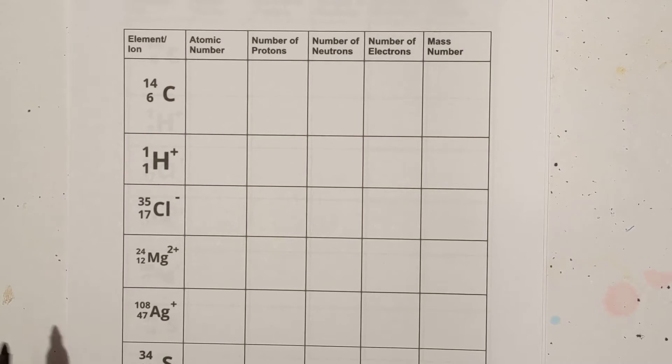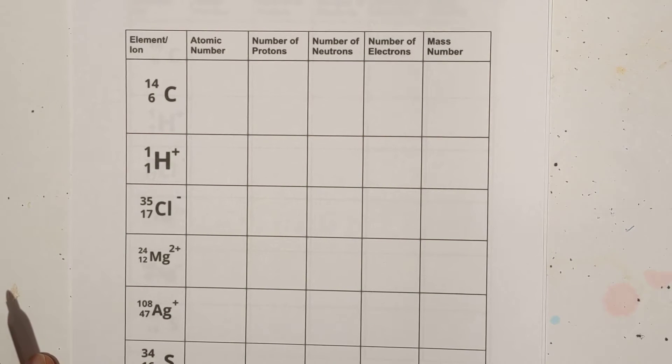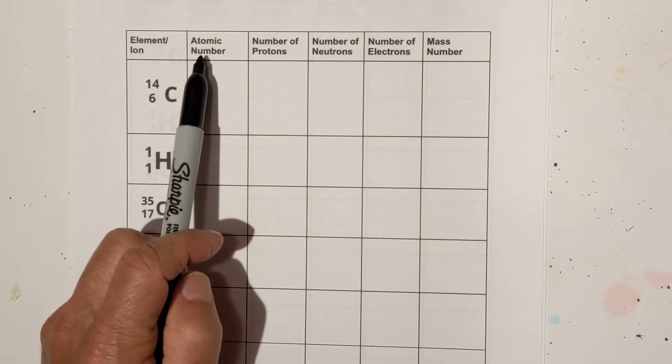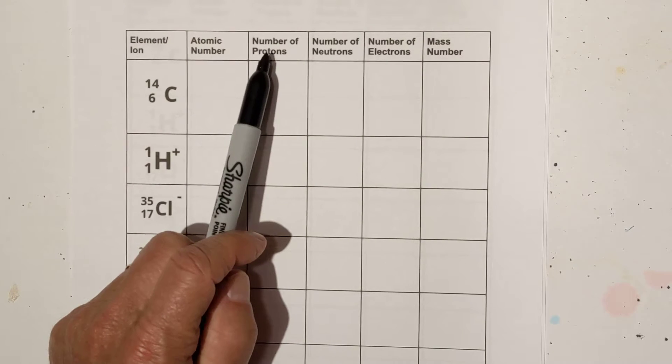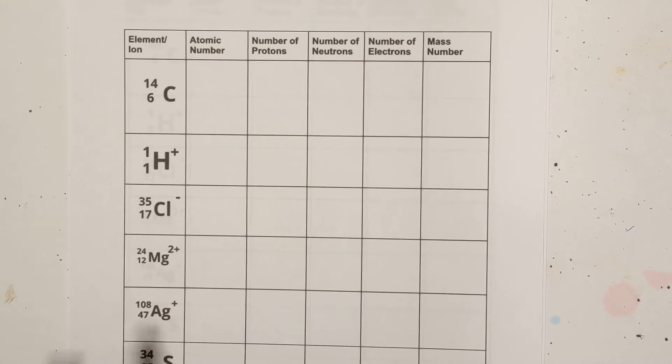Welcome to MooMooMath and Science. In this video let's look at some nuclide symbols and see if we can find the atomic number, number of protons, neutrons, electrons, and then the mass number. So let's go ahead and get started.